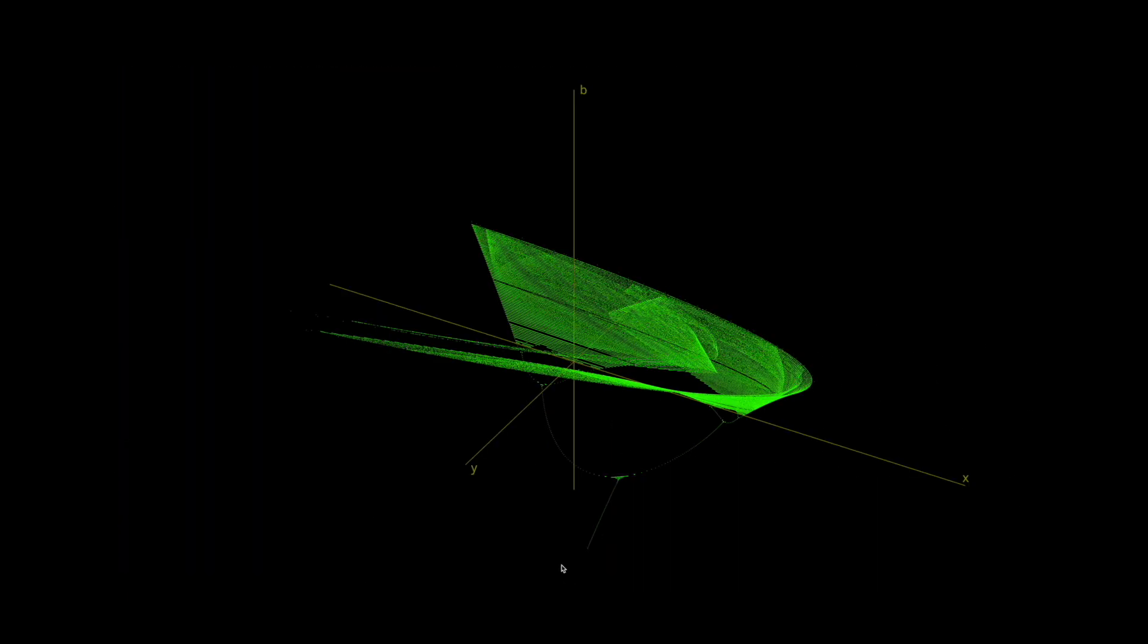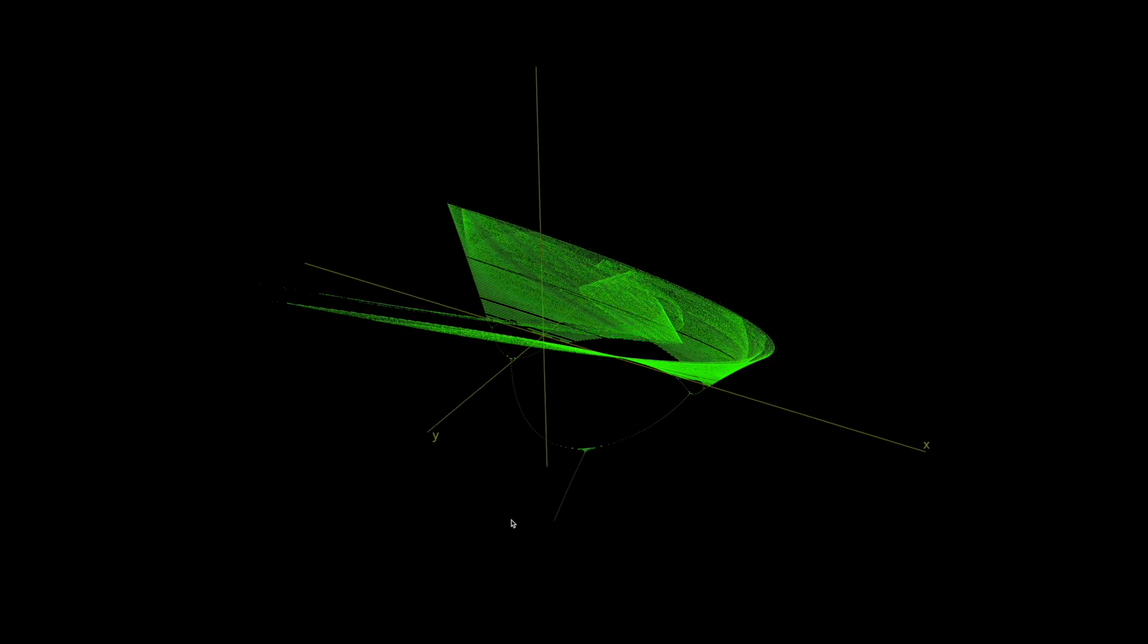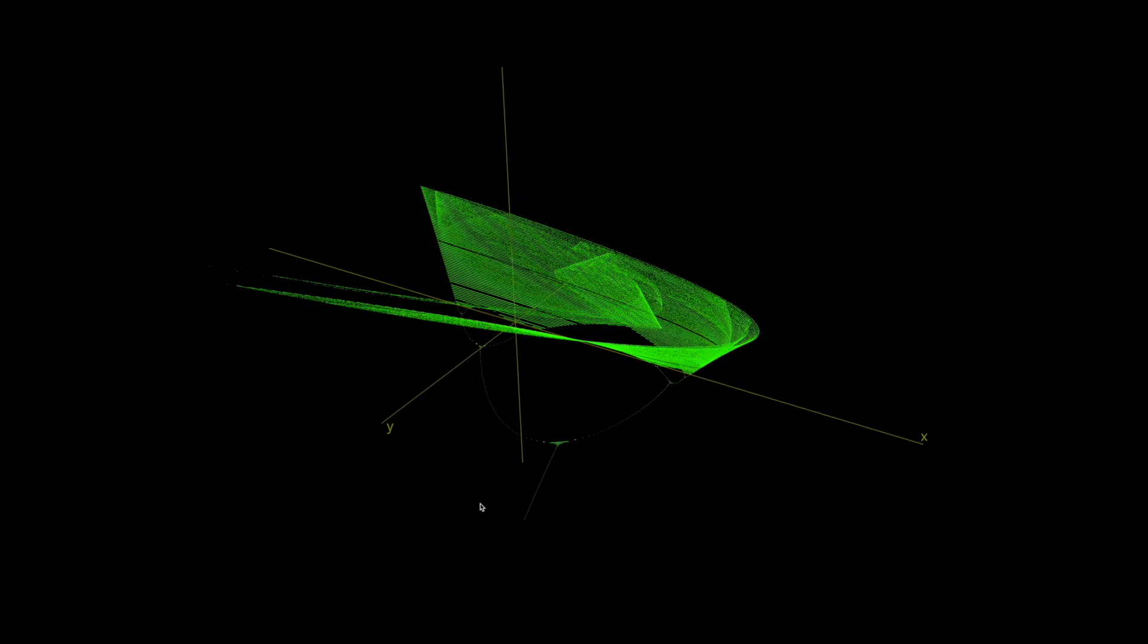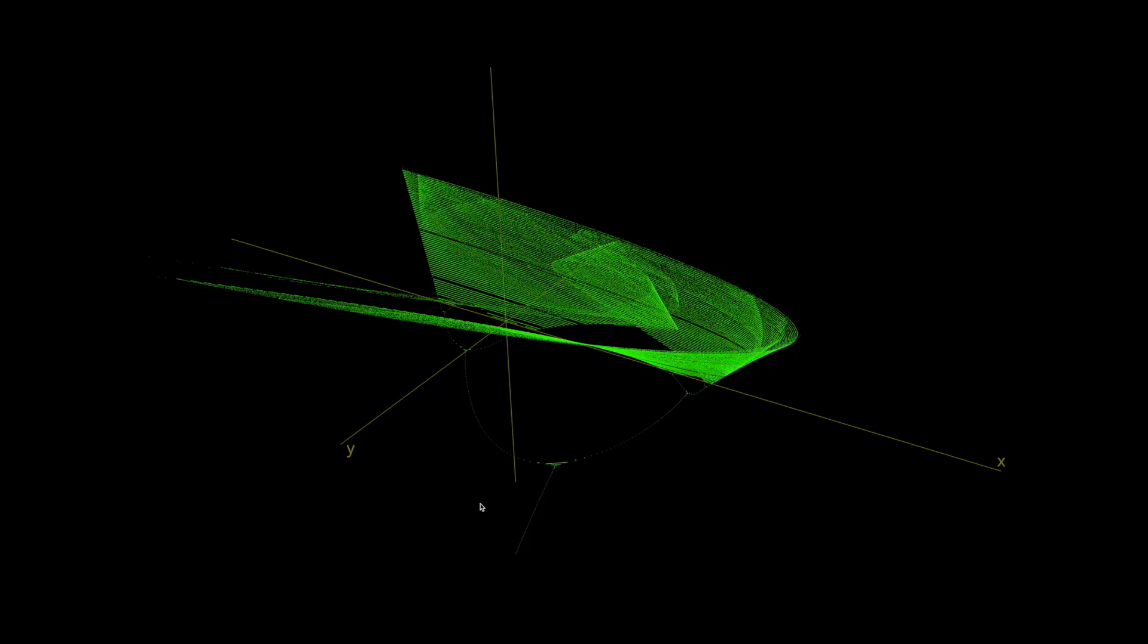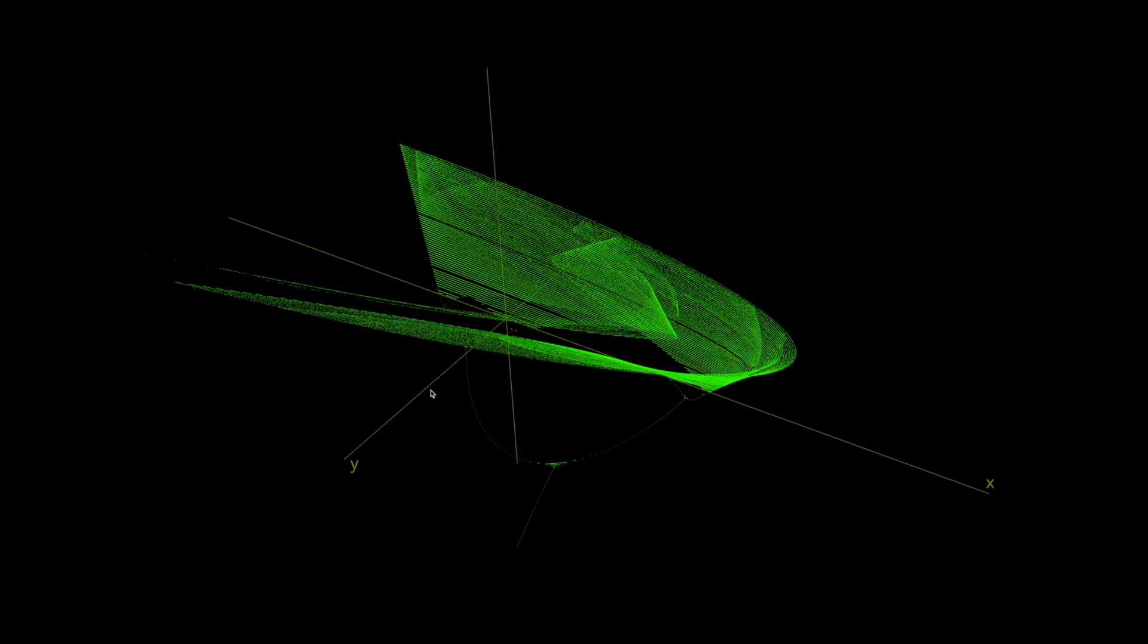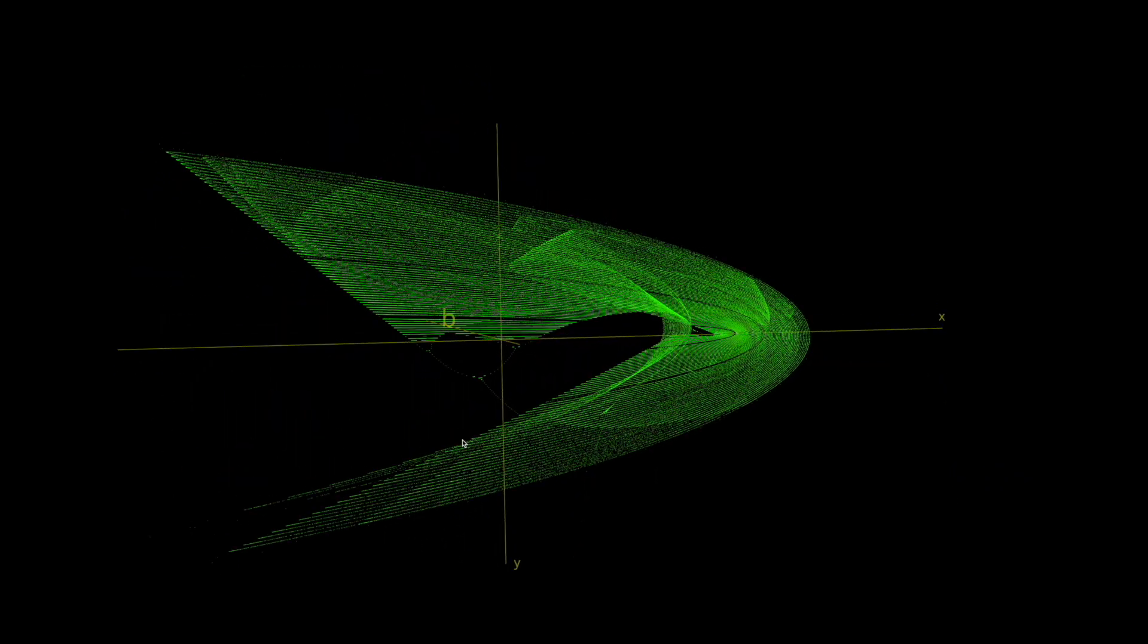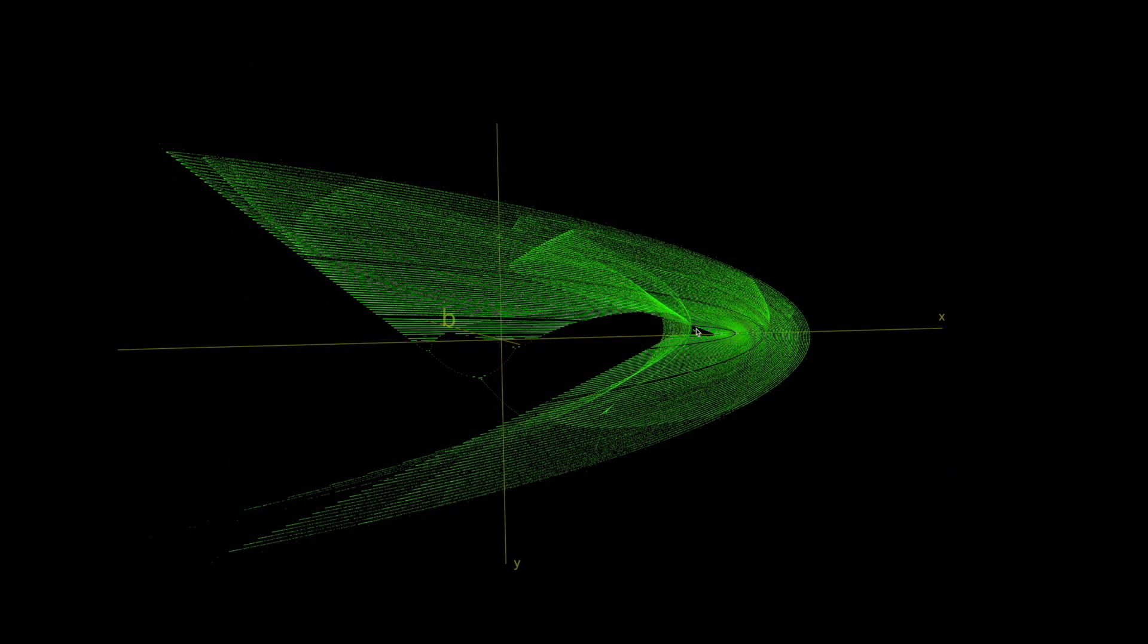We can also plot a bifurcation diagram for parameter B while holding A constant at 1.4. Once again, we see that it's folded up and curved. There is period doubling and chaos. And if we look from above once again, we see the shape of the strange attractor.